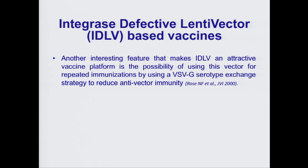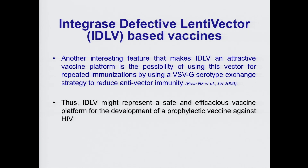Another interesting feature that makes IDLV an attractive vaccine platform is the possibility of using this vector for repeated immunization by using a VSV-G serotype exchange strategy to reduce antivector immunity. Therefore, IDLV might represent a safe and efficacious vaccine platform for the development of a prophylactic vaccine against HIV.